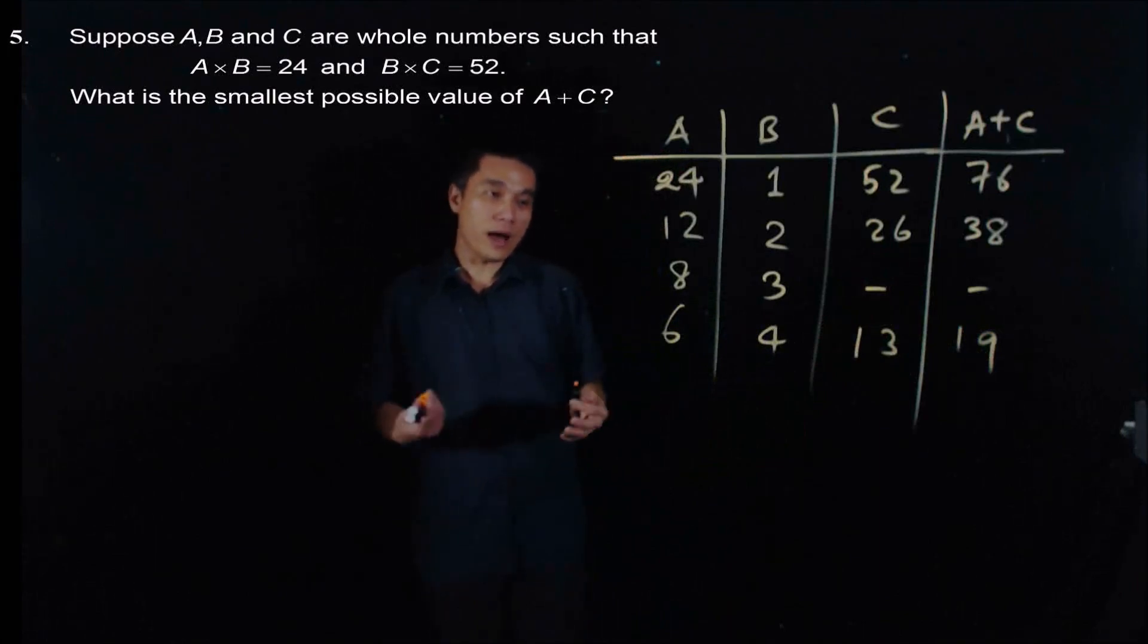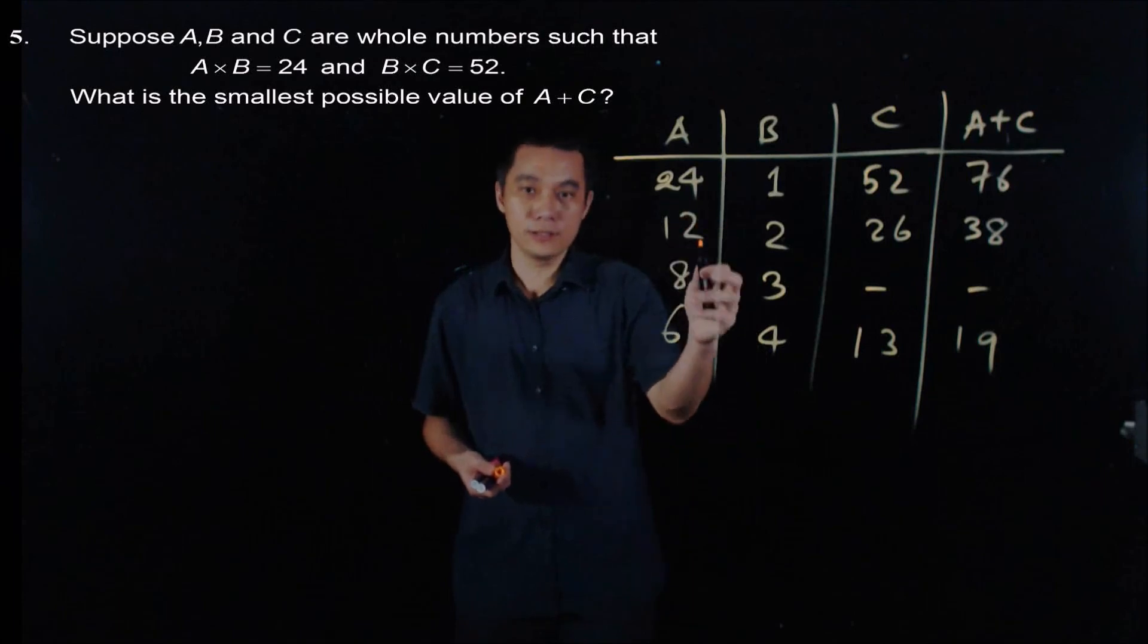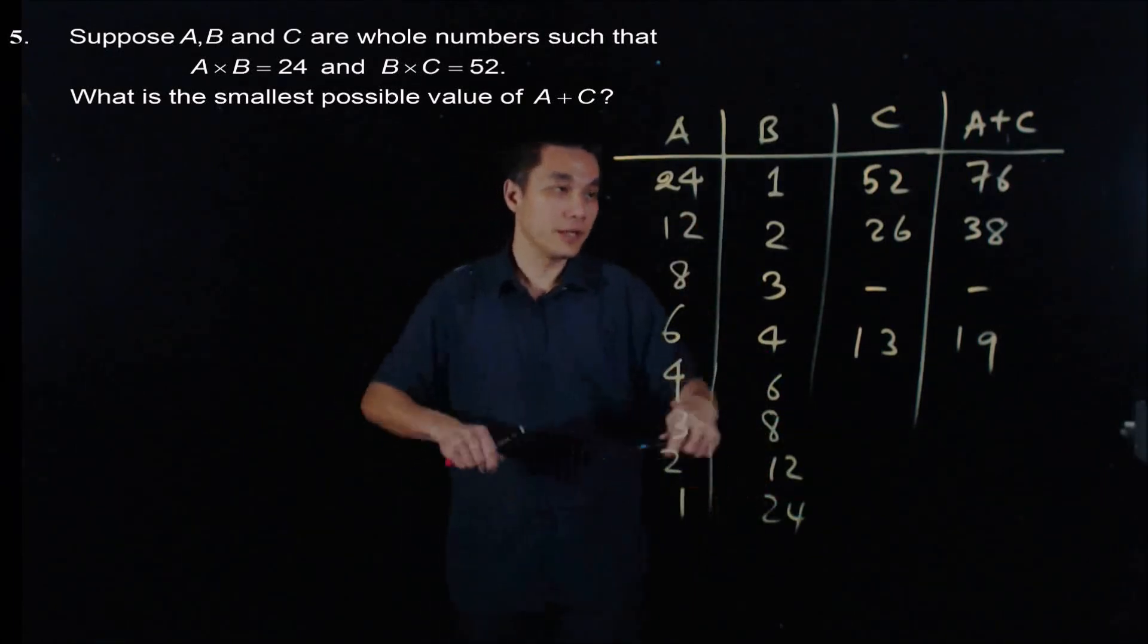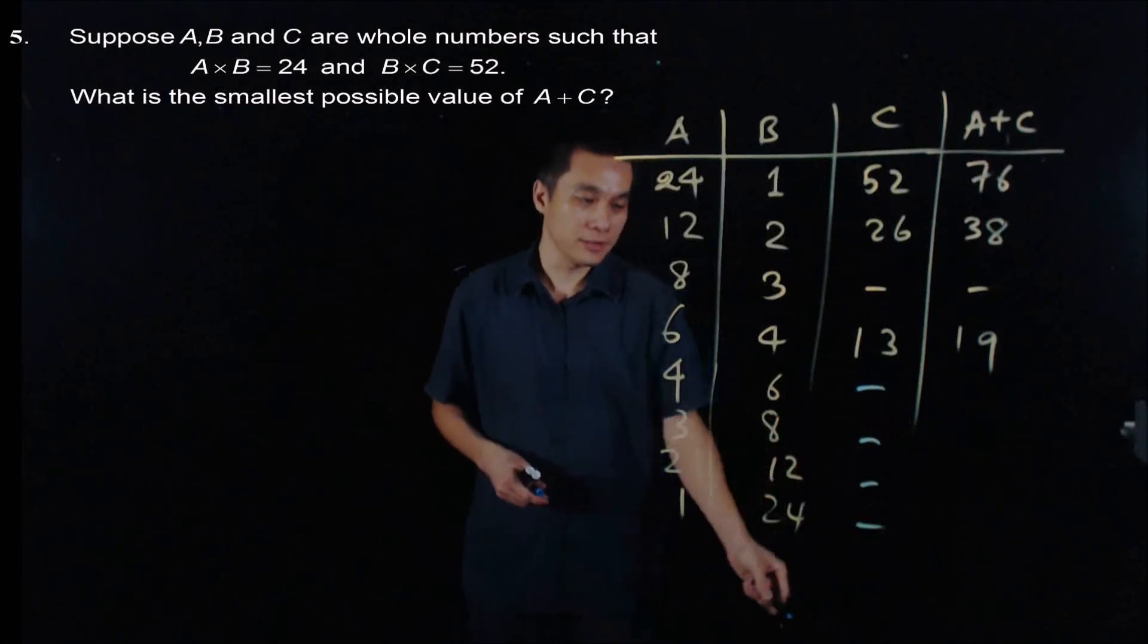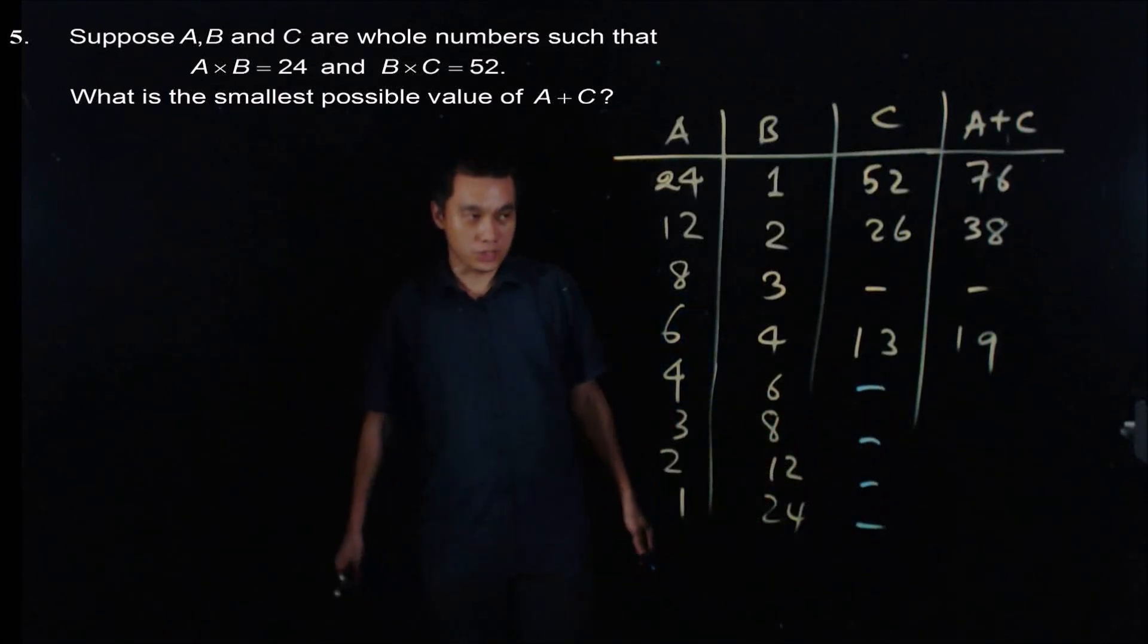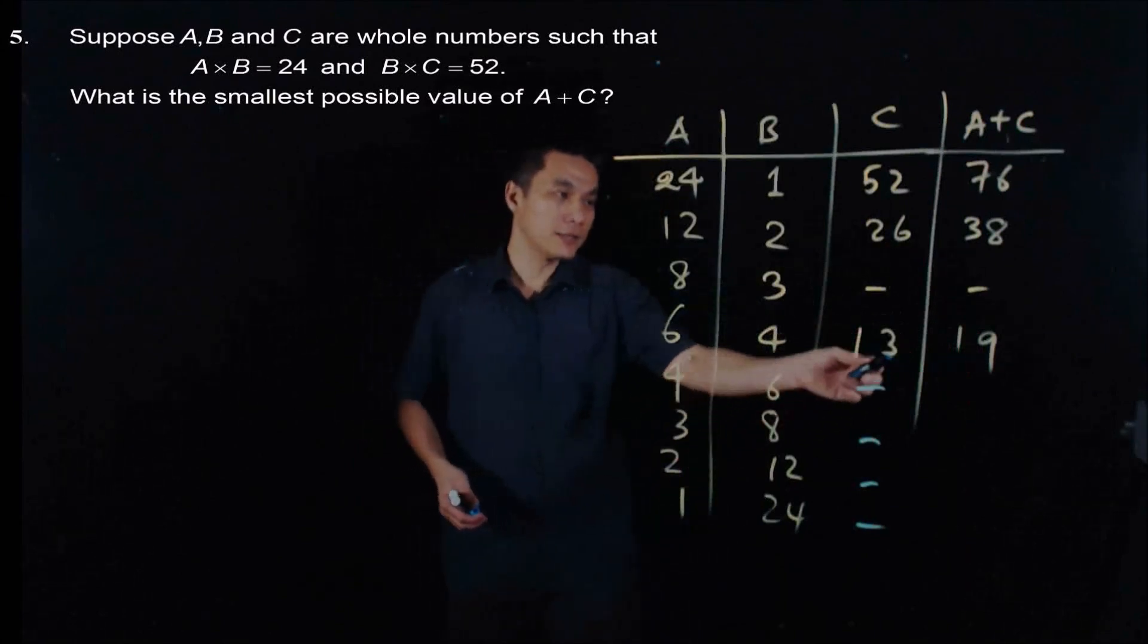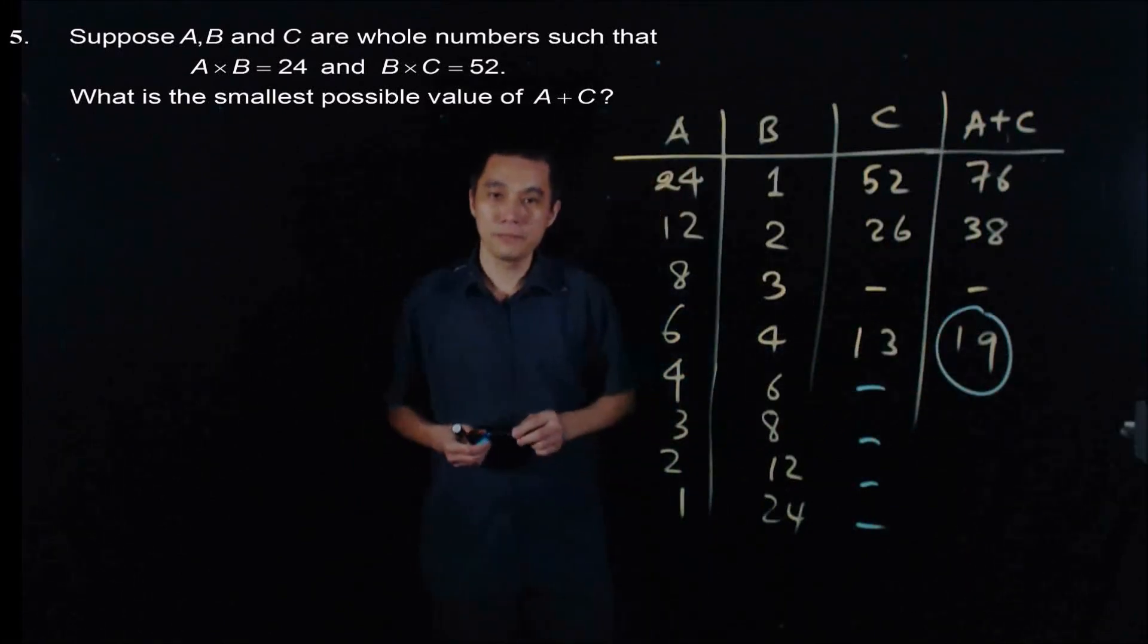And what other possible value for B? B can be 6. For each of these values, there's no such C exists. C is not an integer. So among all the values of A plus C, 19 is the minimum.